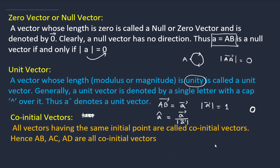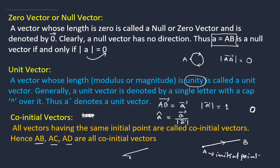Now, co-initial vectors. In vector AB̄, point A is the starting point, called the initial point. If several vectors such as AB̄, AC̄, and AD̄ share the same starting point A, these vectors are called co-initial vectors. This term is important when solving examples in later lectures.